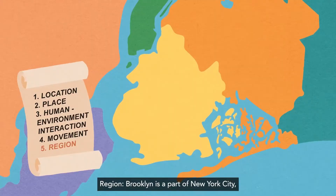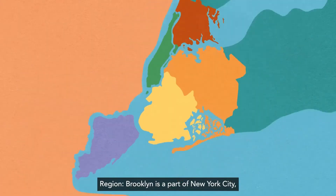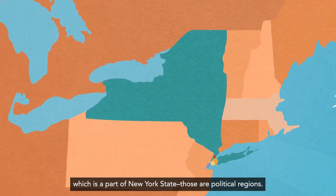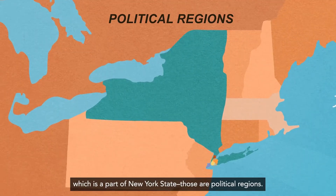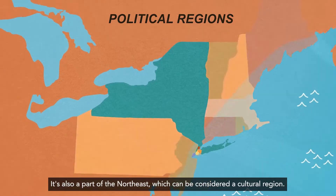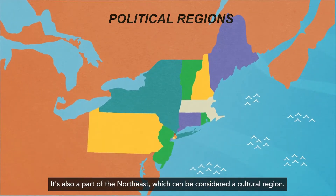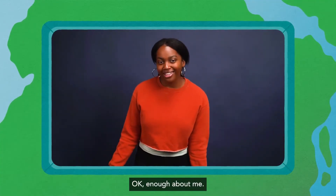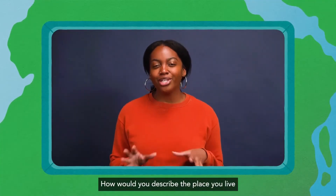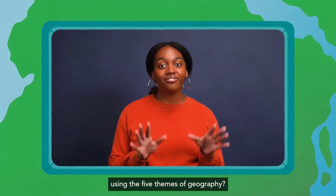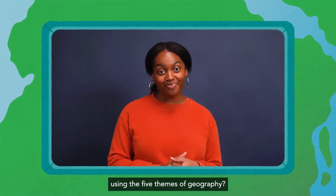Region: Brooklyn is a part of New York City, which is a part of New York State — those are political regions. It's also a part of the Northeast, which can be considered a cultural region. How would you describe the place you live using the five themes of geography?